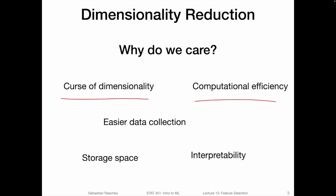There's also the aspect of computational efficiency. For example, k-nearest neighbors is very expensive if we have a large dataset with a lot of training examples, but it can also be slow if we have a lot of features, because in each case we have to compute a distance metric — for example, the Euclidean distance — which depends on the number of features. So sometimes it might be worthwhile to reduce the feature set to also improve computational performance. Of course, our goal is always to reduce the feature set such that we don't lose too much predictive performance. Another aspect related to predictive performance is easier data collection.